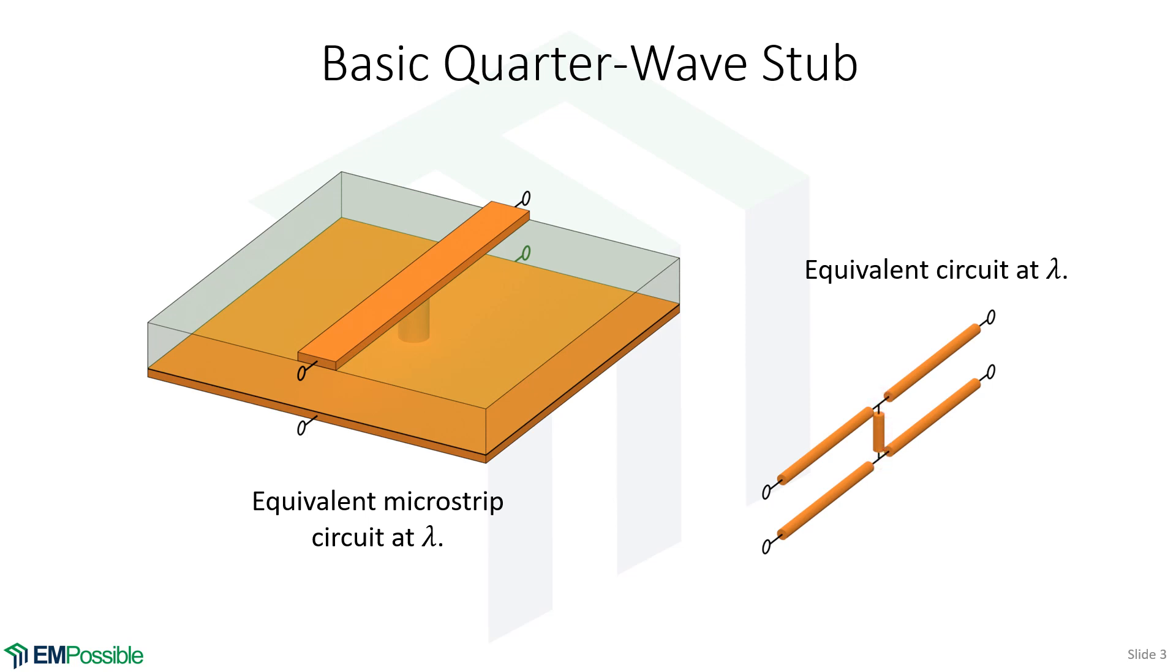Now, the difference is that original open circuit was for all frequencies. Since we've backed away a quarter wavelength, this only looks like a short circuit at that wavelength, which is a quarter wavelength.